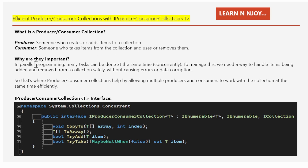Why are producer-consumer collections important in parallel programming? Many tasks can be done concurrently, and to manage this we need a way to handle items being added and removed from a collection safely without causing errors or data corruption. The producer-consumer pattern helps by allowing multiple producers and consumers to work with the collection at the same time efficiently.